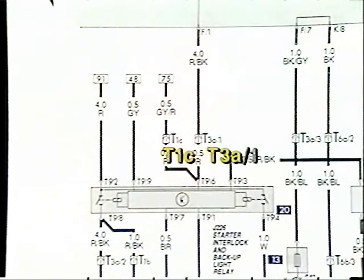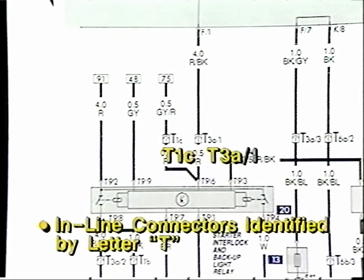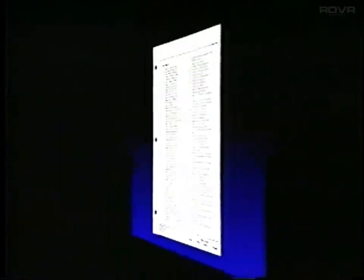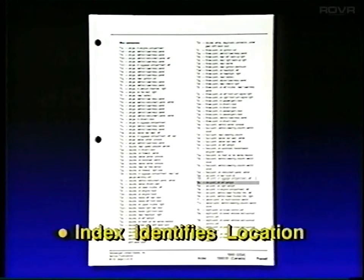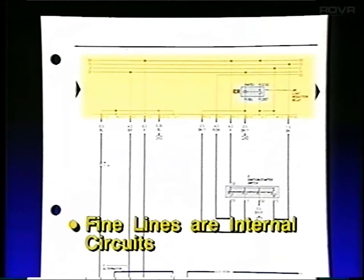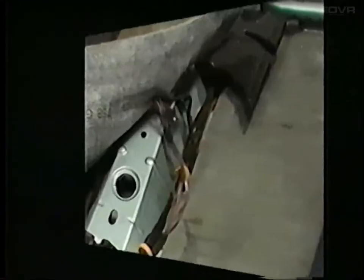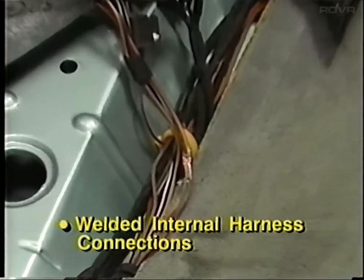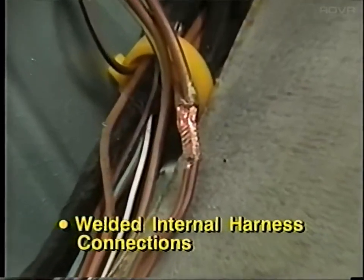Now let's briefly review what we have covered. Inline wire connectors are identified by the letter T, and the number after the letter T identifies how many terminals the connector has. The general location of each connector is given in the index at the front of the wiring diagram. Internal circuits in the fuse relay panel and other components are shown as fine lines. Some power and ground connections are welded internally in the wire harness.